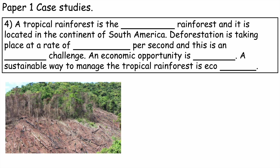Next: a tropical rainforest — the Amazon Rainforest, located in the continent of South America. Deforestation, which means the cutting down of trees, is taking place at a rate of one football pitch per second, and this is an environmental challenge. An economic opportunity is cattle ranching — you could also have palm oil plantations. A sustainable way to manage the tropical rainforest is eco-tourism.